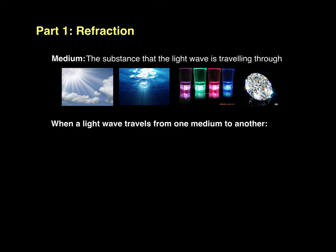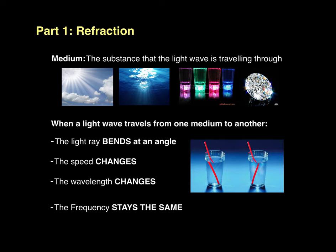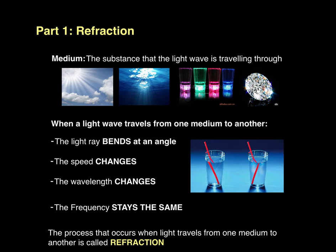When a light wave travels from one medium to another, the light ray bends at an angle. This is why objects in water appear to be bent at an angle from where they go in. The speed of light changes, the wavelength of the light changes, but the frequency of the light wave stays the same. The process that occurs when light travels from one medium to another is called refraction.